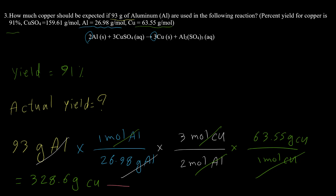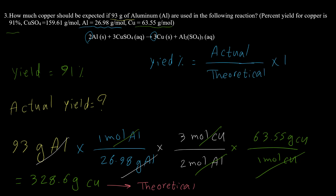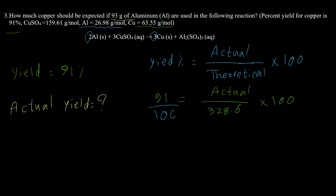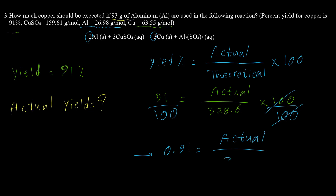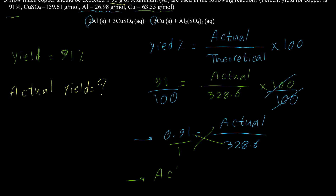We also know the percent yield, so we can calculate the actual yield. The percent yield formula gives: 91 = actual yield over 328.6 times 100. Dividing both sides by 100: 0.91 = actual yield over 328.6. Cross-multiplying, the actual yield equals 0.91 times 328.6, which equals 299.03 grams of copper.